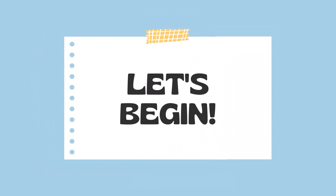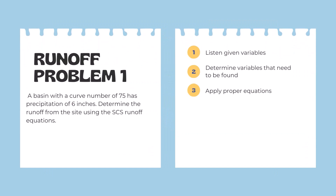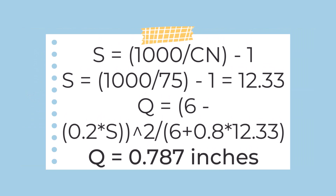Let's begin solving some sample problems with the SCS runoff equations. For our first problem: a basin with a curve number of 75 has precipitation of six inches. Determine the runoff from the site. Following our three-step process — determine given variables, identify variables to find, then apply the proper equations — we use S equals 1,000 divided by CN minus 1. So 1,000 divided by 75 minus 1 equals 13.33. Plugging that into Q equals P minus 0.2S squared divided by P plus 0.8S, we get Q equals 0.787 inches. So we have 0.787 inches of runoff depth given the project situation.